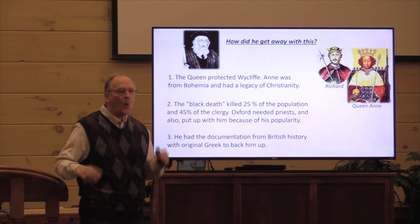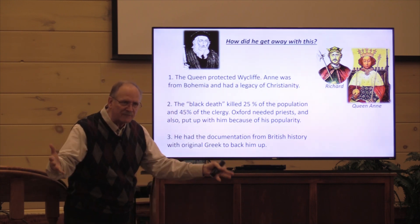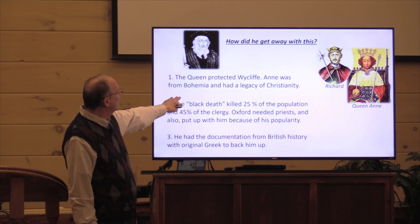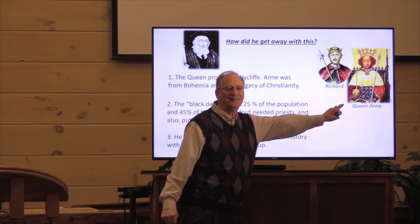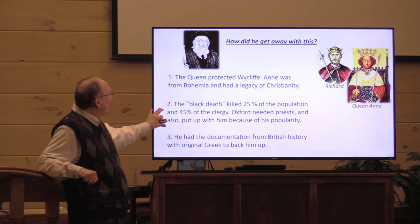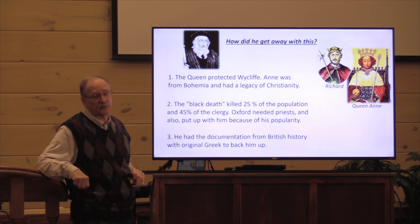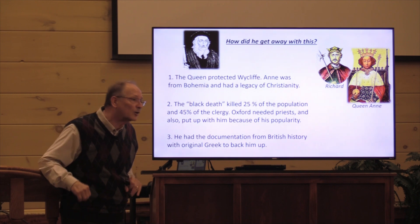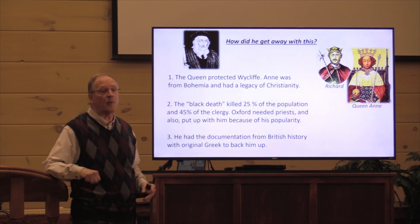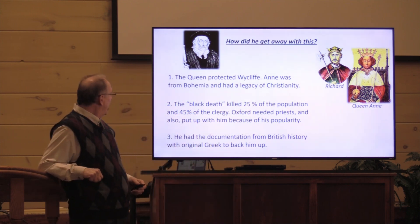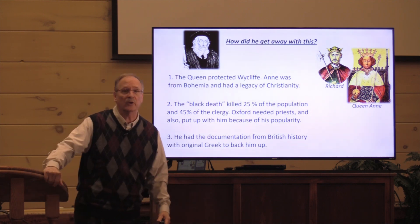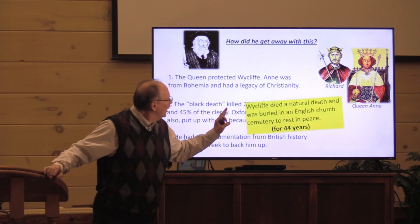How did Wycliffe get away with all of this when it was forbidden on pain of death? Queen Anne from Bohemia, who had a legacy of Piedmont Christianity in her family, protected Wycliffe and wouldn't let anyone touch him. Also, the Black Death killed 25% of the population and 45% of the clergy — so many more clergy because they were caring for the dying rather than running away — so Oxford needed priests and put up with him because of his popularity and the queen's protection. He also had documentation from British history with original Greek to back him up.